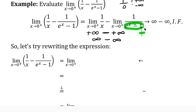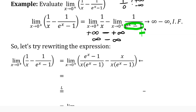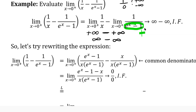Now we're going to see if we can rewrite the expression to apply L'Hôpital's rule. Since we have two fractions, one method is to perform the subtraction by finding a common denominator. The common denominator is x·(eˣ - 1). After subtracting, plugging in 0 gives (1 - 1 - 0) in the numerator, which is 0, and 0·0 = 0 in the denominator. So it's a 0/0 indeterminate form — one for which L'Hôpital's rule does apply.